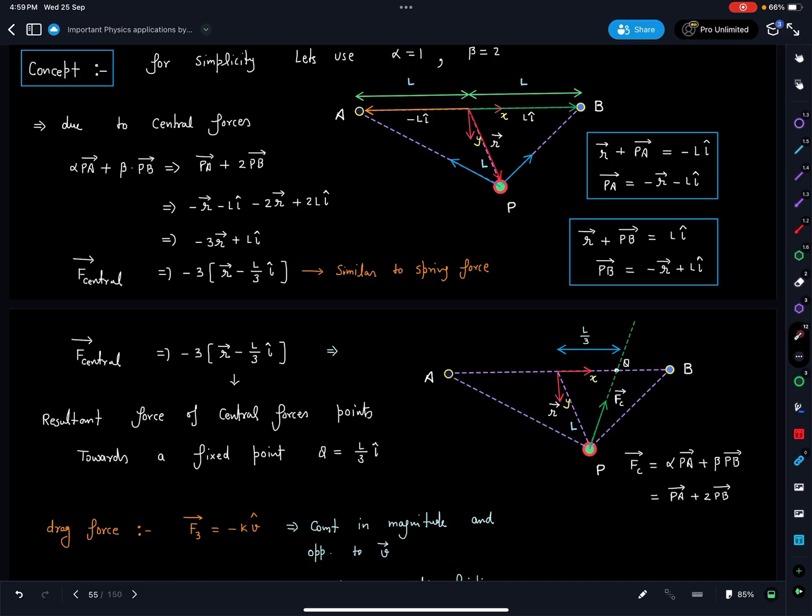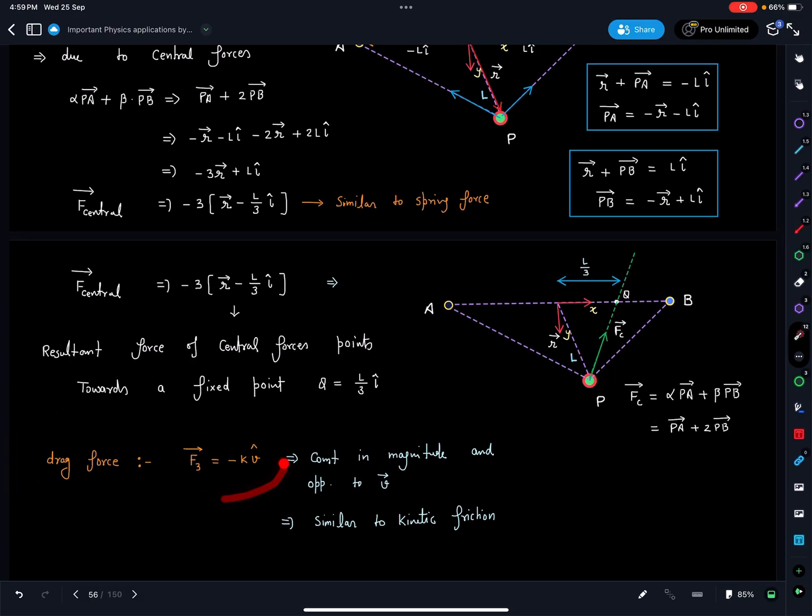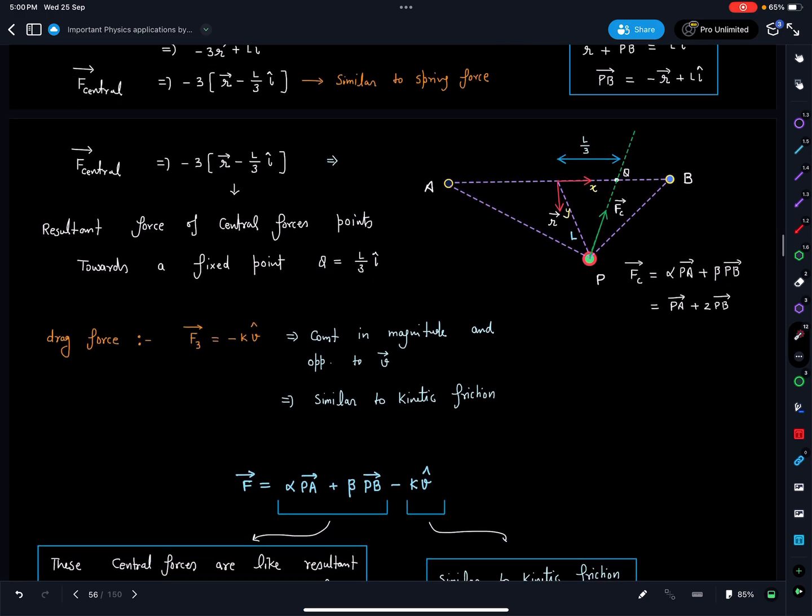Now the next part: if we see the drag force here, it is minus K V cap, so it is constant in magnitude and opposite to vector V. It is similar to kinetic friction force. So now the entire part we will just reduce it like this: it is similar to spring force, K delta x kind of function is coming. Delta x will be basically r minus this value, so it is like another spring of zero natural length you can say.